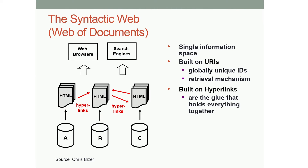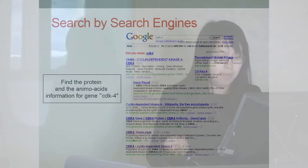The worldwide web we have now can actually be viewed as a web of documents. We have a lot of information online, but it's organized by documents — textual documents, images, music files, videos, audios — and each document has a URI. We're not operating on the data level, but on the document level. We can locate a specific document by a URI or URL, and they are linked together by hyperlinks.